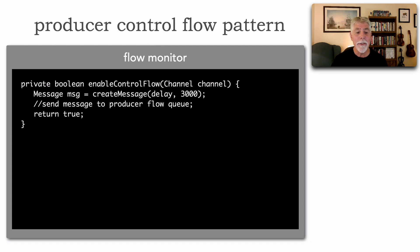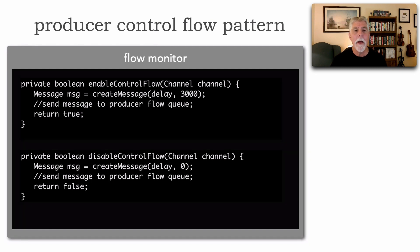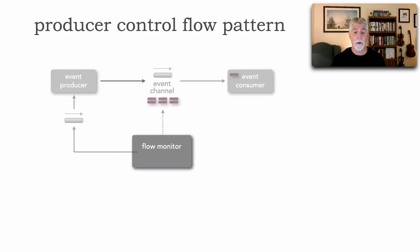Now to disable it I send the same message but I set that value to zero meaning don't delay at all and now send that message to everybody and return false which means we're no longer in control flow. Okay so that's the flow monitor logic.